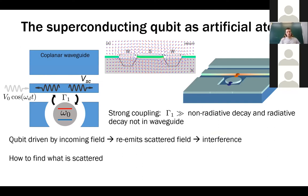Now let's consider not just an atom in open space but a planar waveguide — a well-known structure fabricated in cleanroom conditions, consisting of a central line and planar ground conductors. The field in this structure is not confined; it can propagate left and right in both directions, making it equivalent to a one-dimensional open space. The field modes in this waveguide form a continuum with linear dispersion.